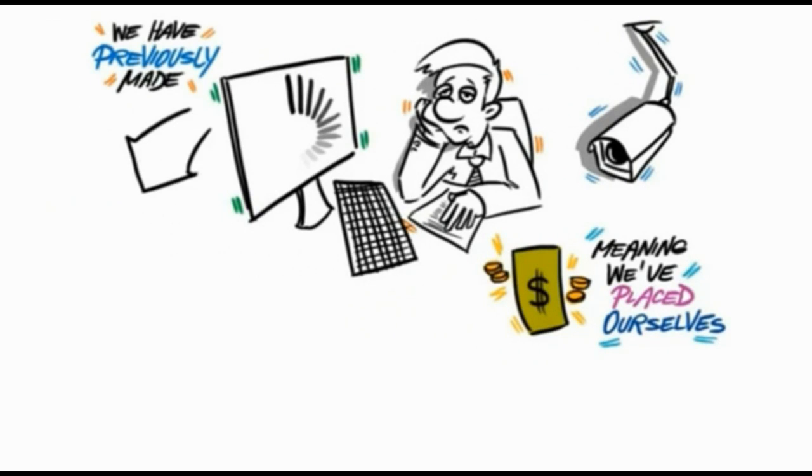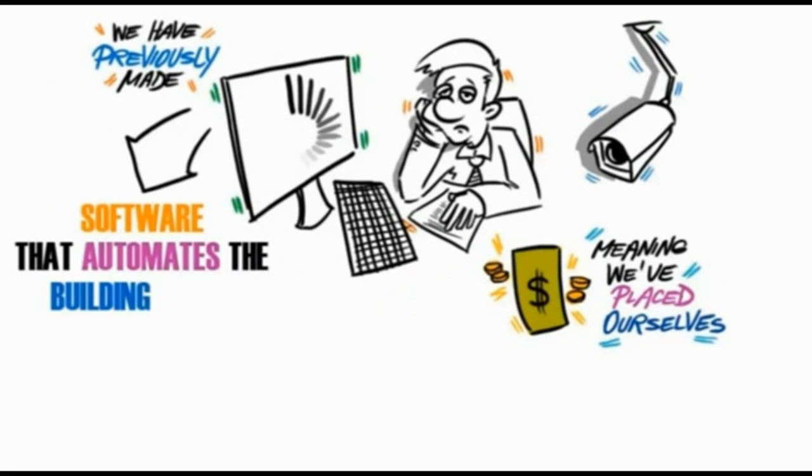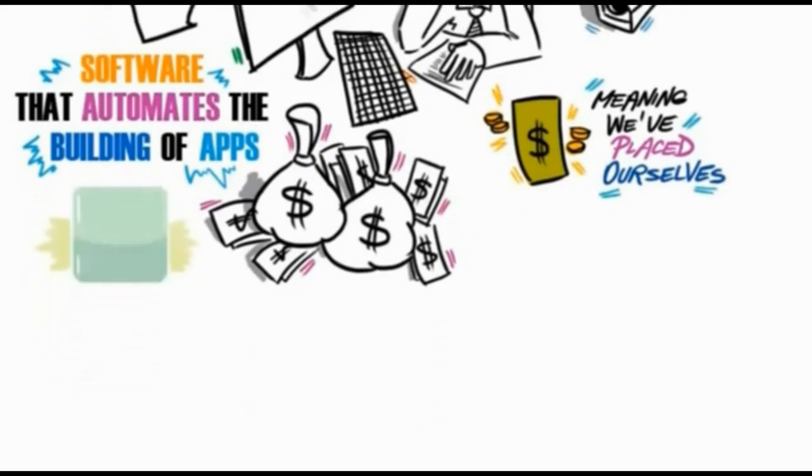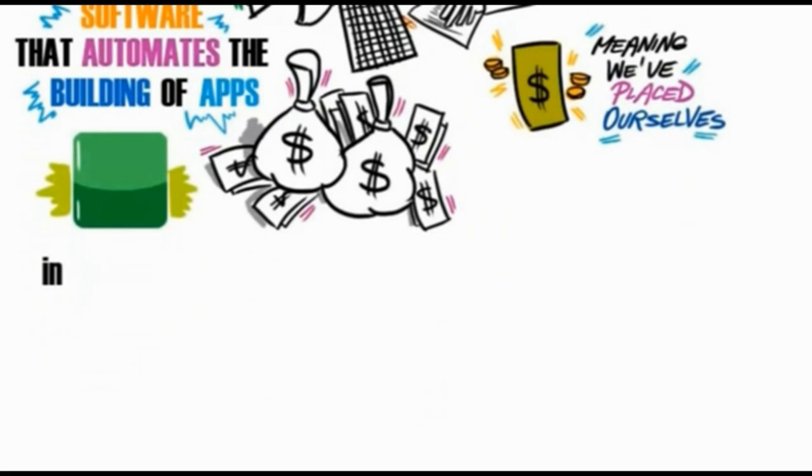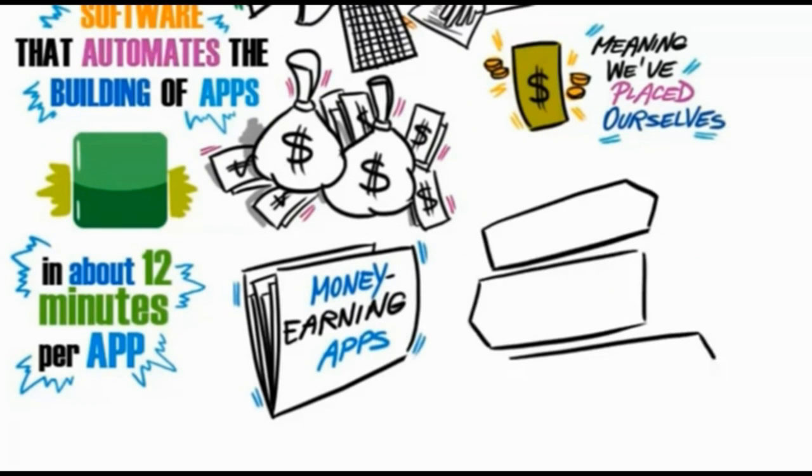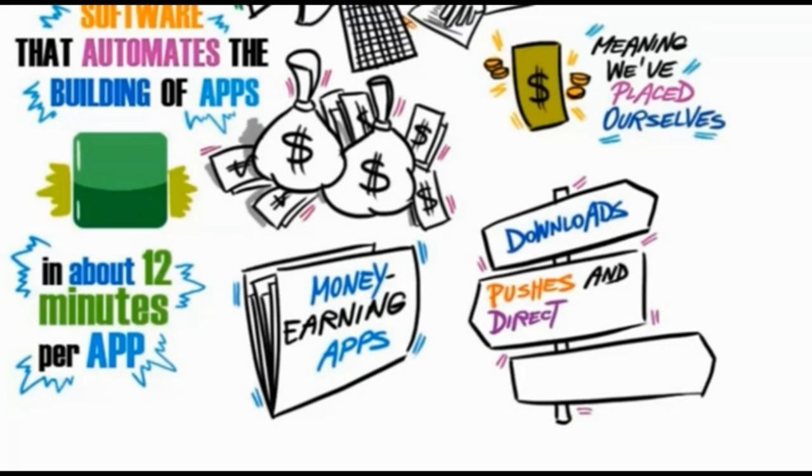So that's what this is all about. Software which automates the building of apps. Because we're talking of a numbers game here. To make really good money, we need to fire up Green App Machine to pump out as many apps as possible in about 12 minutes per app. Before long, you'll have a portfolio of money earning apps. Apps that will be earning you money in a variety of ways through downloads, pushes and direct sales to small businesses.